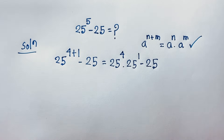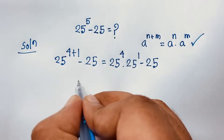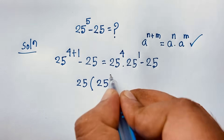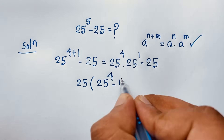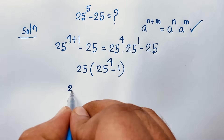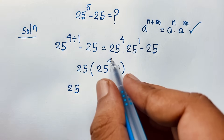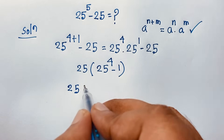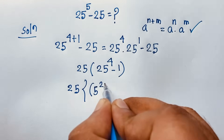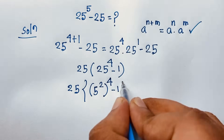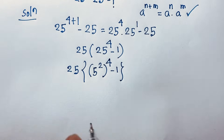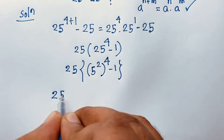Now you can see that 25 is a common factor. Factoring out 25 gives us 25 × (25^4 − 1). Now I need to evaluate 25^4. I rewrite 25 as 5^2, so 25^4 becomes (5^2)^4, which equals 5^8, minus 1.